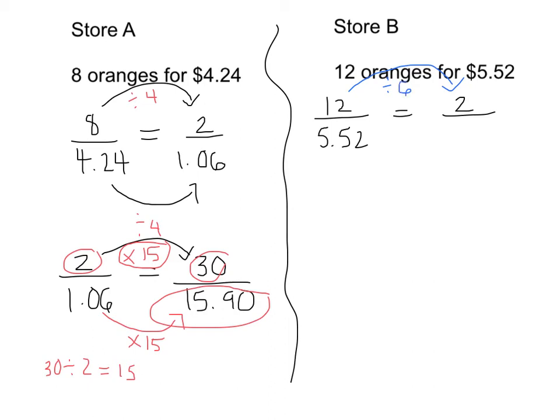Whatever you do to the numerator, you must do to the denominator. So we're going to divide $5.52 by 6, and we get 0.92. So now we know that for 2 oranges, it costs $0.92.